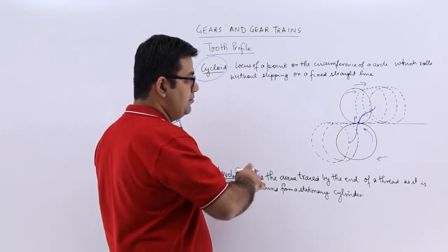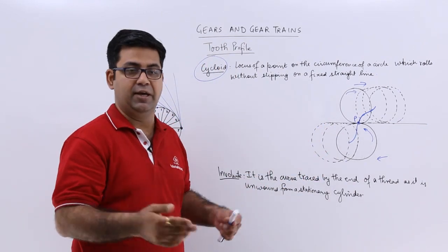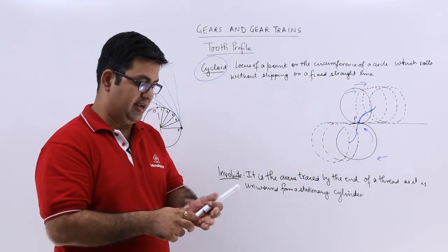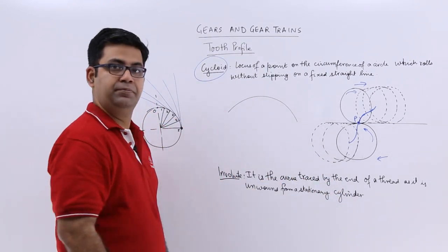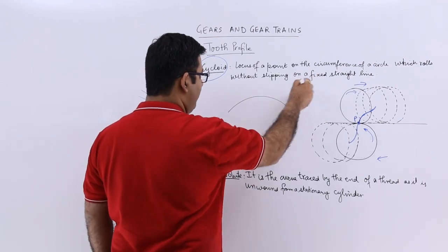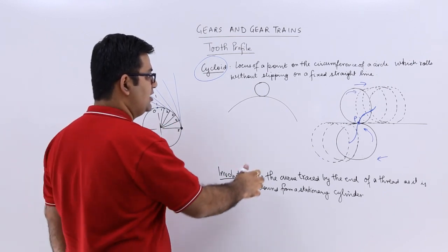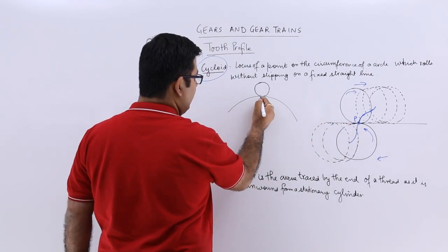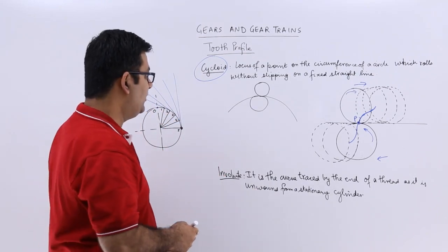Now if I remove this straight line which is not what we have in a gear, if I remove this straight line and instead of this I replace this with another circle, and you have this upper circle on the outside of this bigger circle and this lower circle is on the inside of this bigger circle.